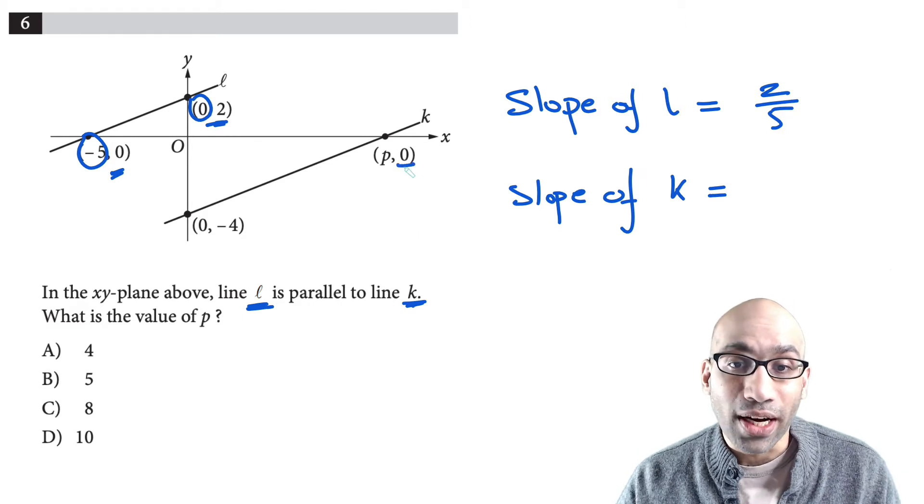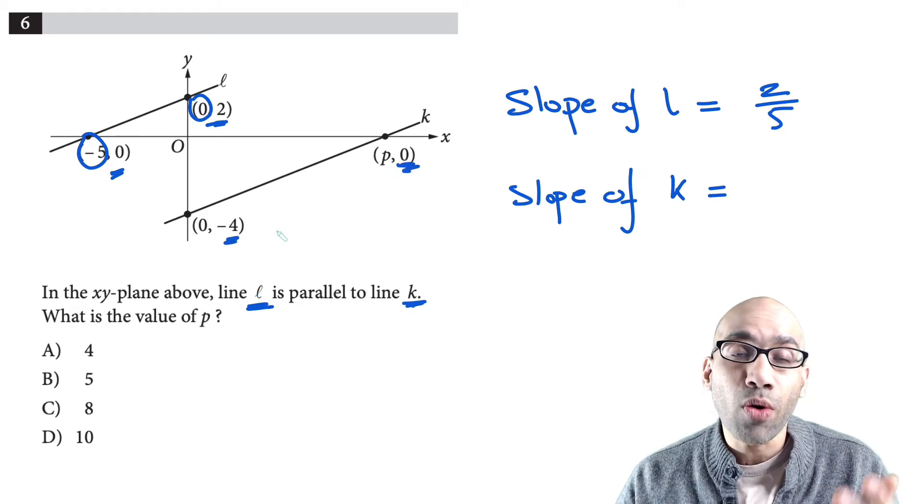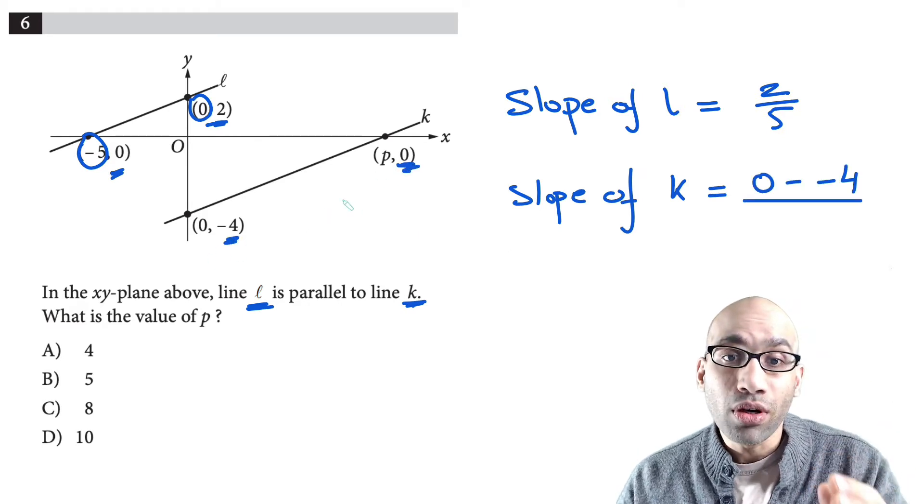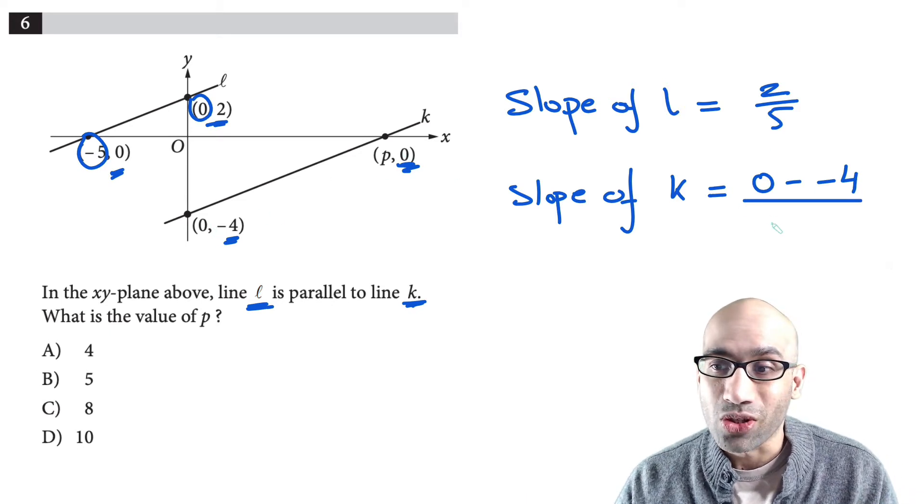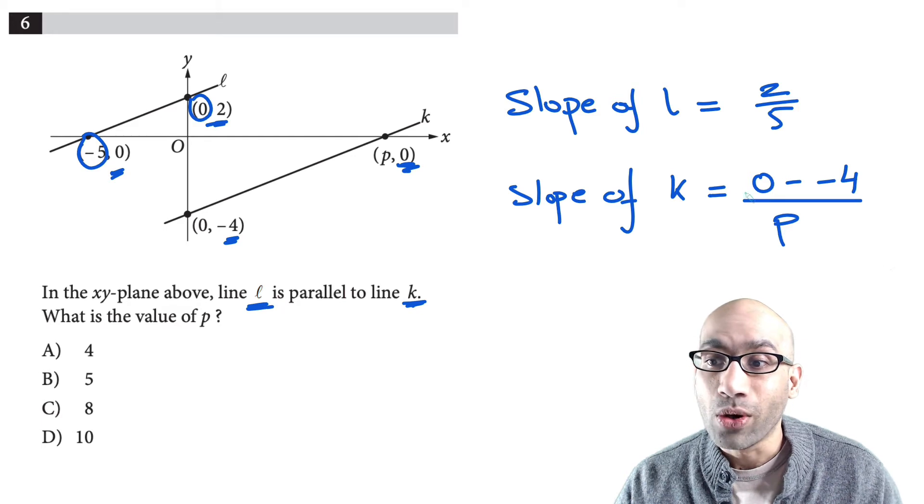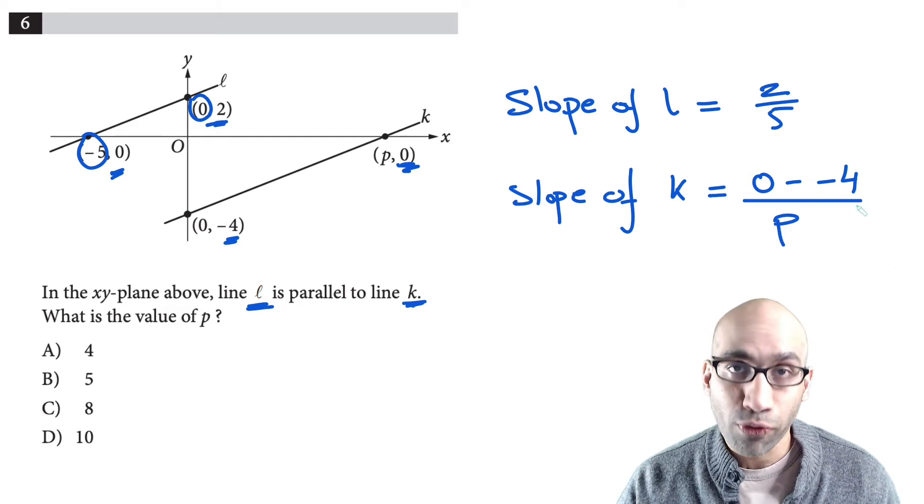Now the slope of line K is again y2 minus y1. So it's 0 minus negative 4 over x2 minus x1, so p minus 0, so that's just going to be p. Now 0 minus negative 4 is just 4 over p.